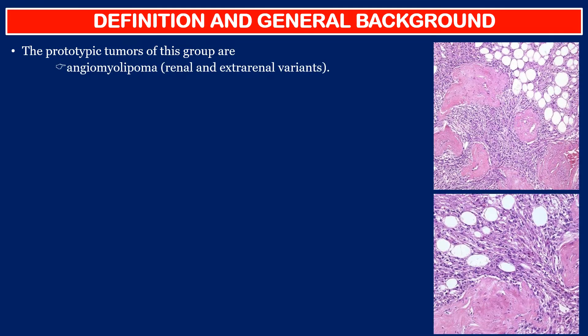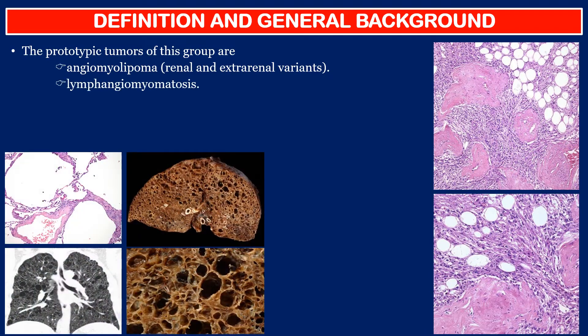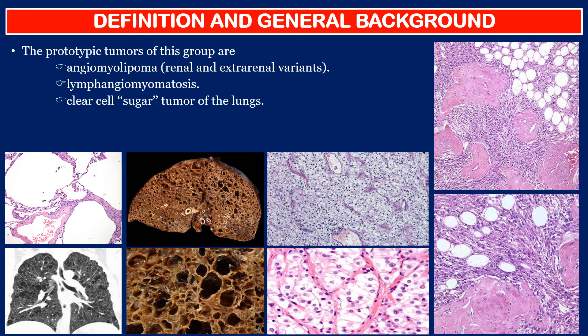The prototypic tumors of this group are angiomyolipoma (renal and extrarenal variants), lymphangioleiomyomatosis, clear cell sugar tumor of the lungs, and PEComa not otherwise specified (NOS).